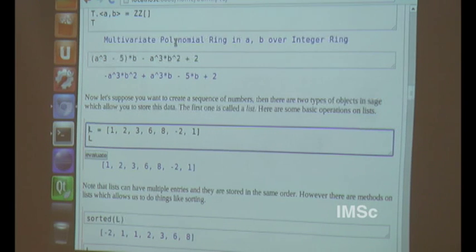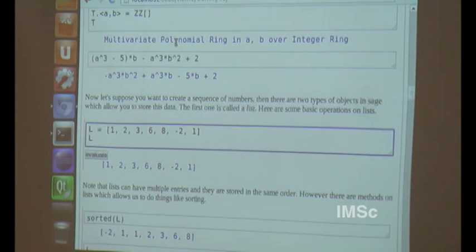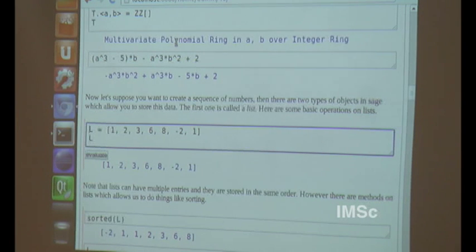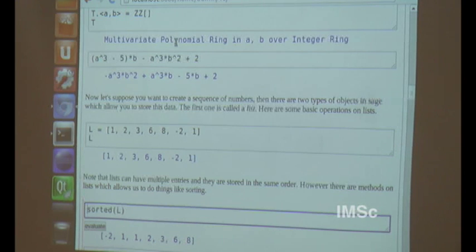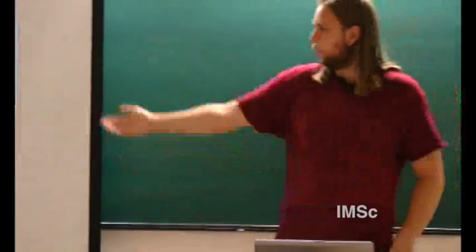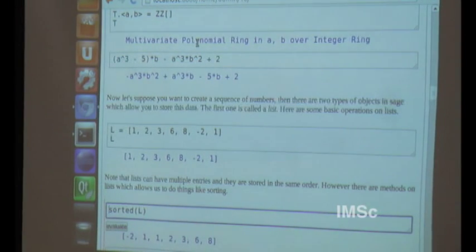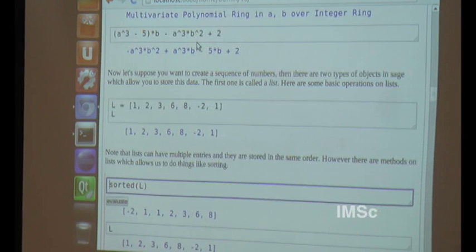A lot of times when you're programming you want to create a certain sequence of things. In SAGE and more generally Python, there's two types of objects that can do this. The first one is a list. You can create lists just like this: nice, simple, straightforward. You can have multiple entries and they're stored in the exact same order that you give them. There's lots of methods and functions on lists that you can do. By lots, I mean there's about twelve or twenty.